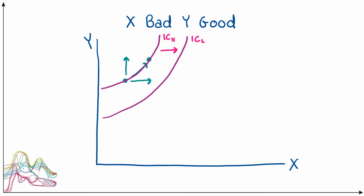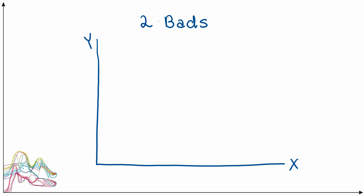Note that you can think about the move from one indifference curve to another in different ways. For example, moving downward, you can envision going from ICH to ICL as the consumer having less of good Y but the same amount of good X. We get to the same conclusion because since Y is a good, having less of Y with the same amount of X makes the consumer less happy.